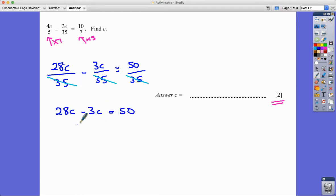So we end up with 28C minus 3C equals 50. And 28C minus 3C is equal to 25C. And you can see where we're going here for only two marks. If you do 50 divided by 25 you get C equal to 2. So that's quite nice, quite enjoyed that one.